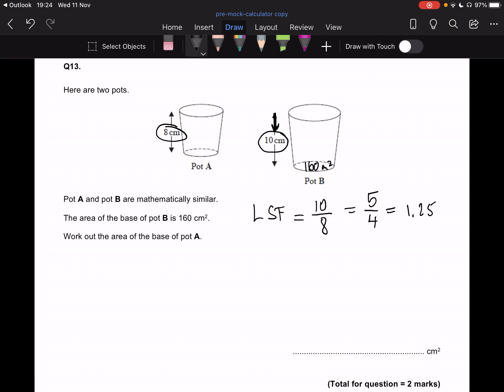What we're looking for though is the area scale factor because we're dealing with areas in the actual question. So the area scale factor is equal to the linear scale factor squared. So the area scale factor is going to be 1.25 squared.